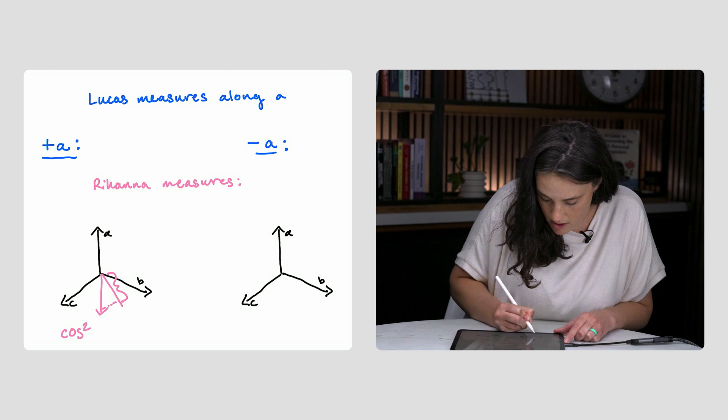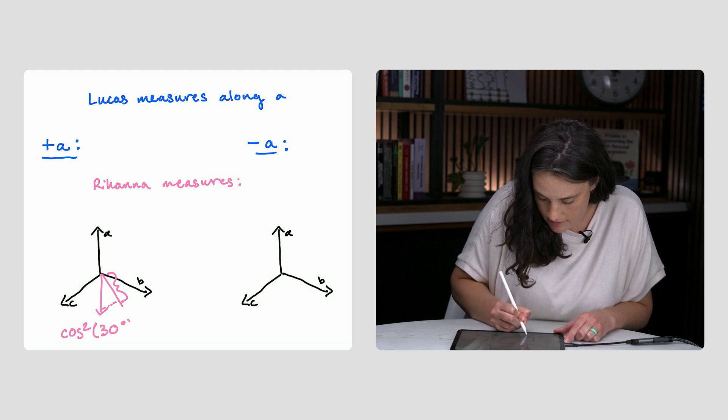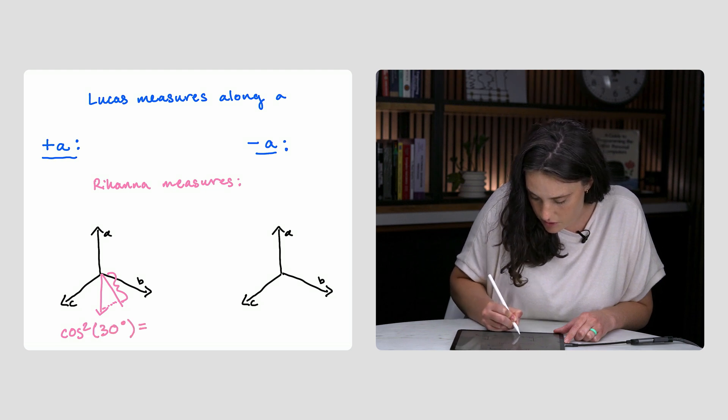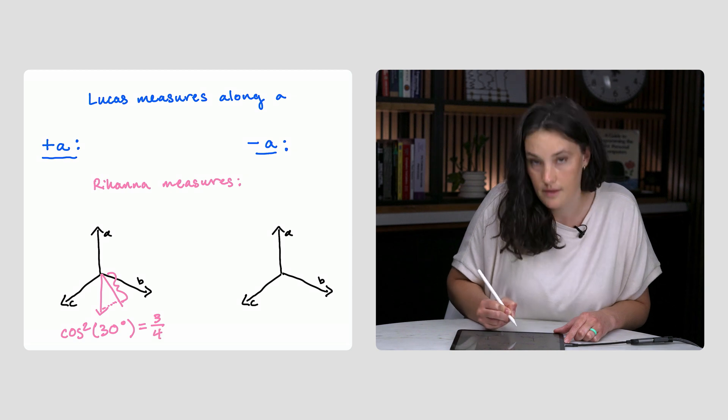Cosine squared of 30 degrees equals 3 fourths. Now,